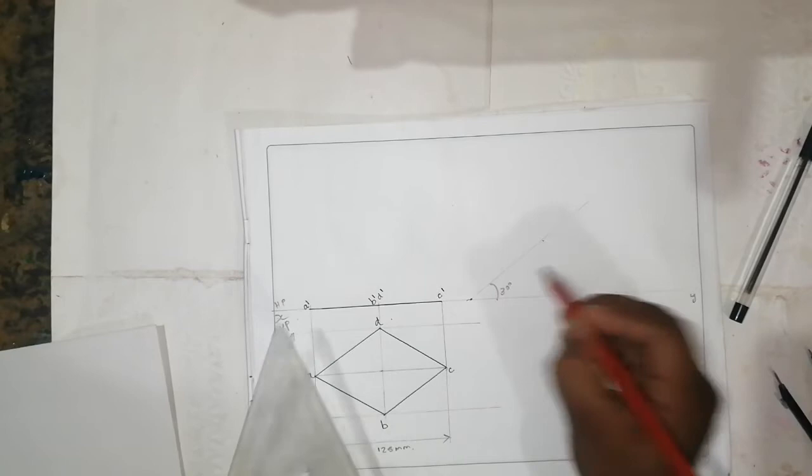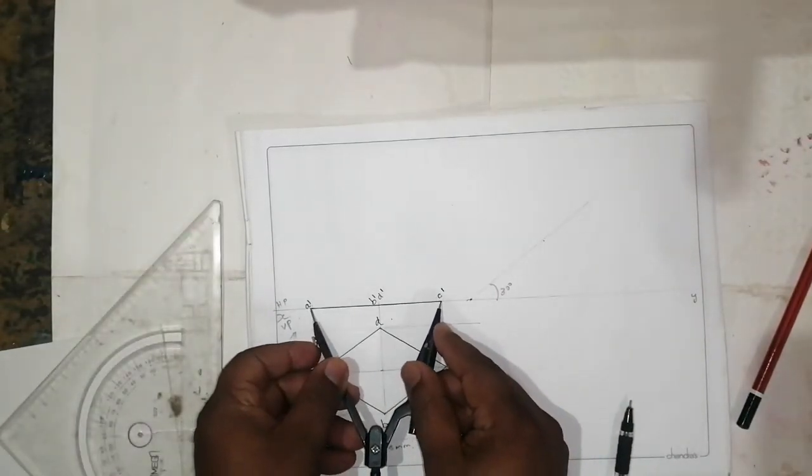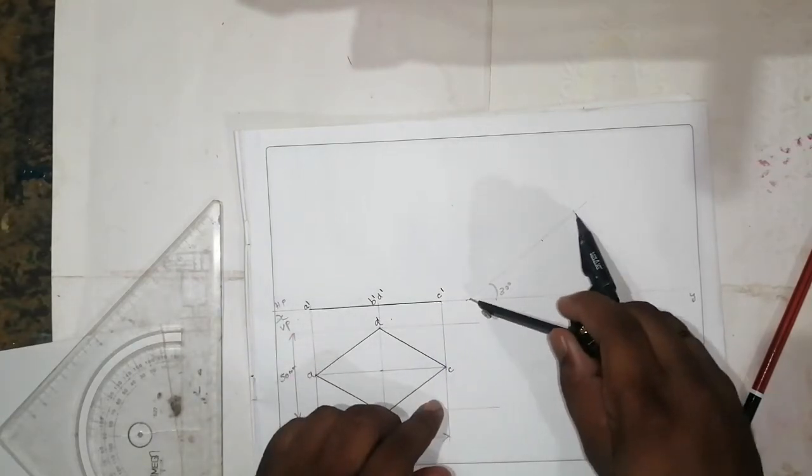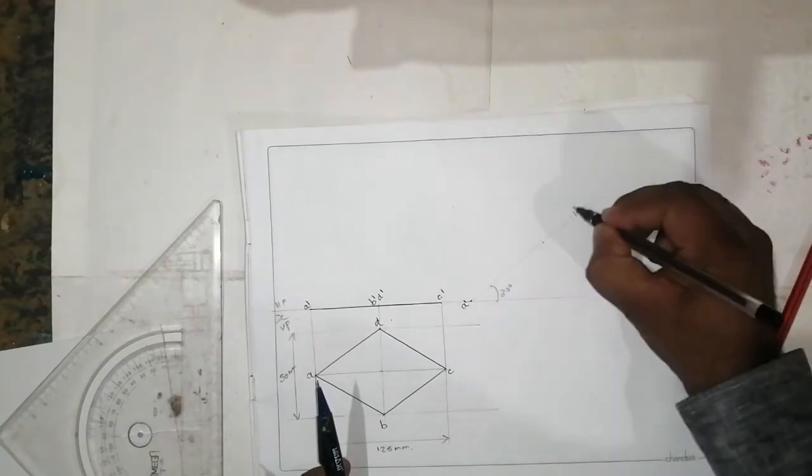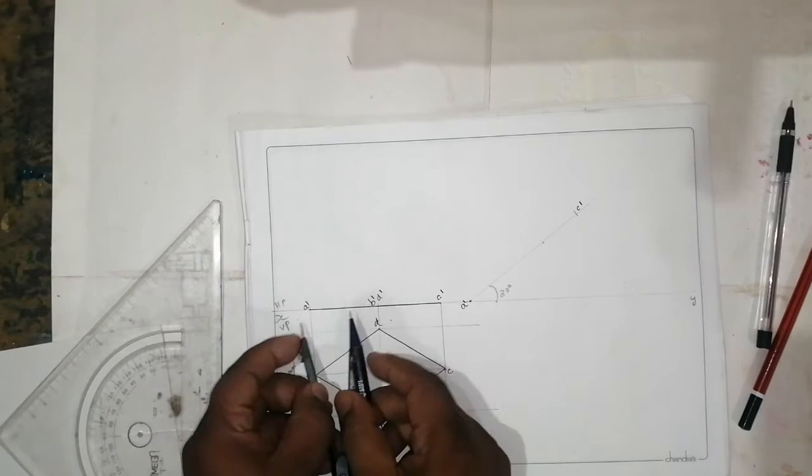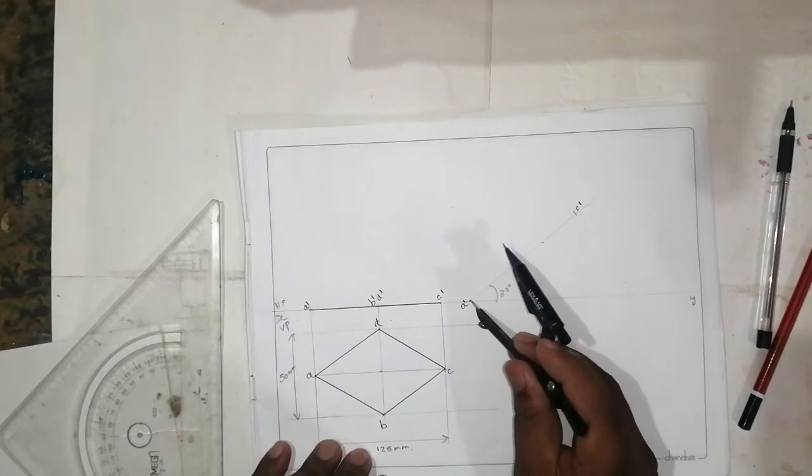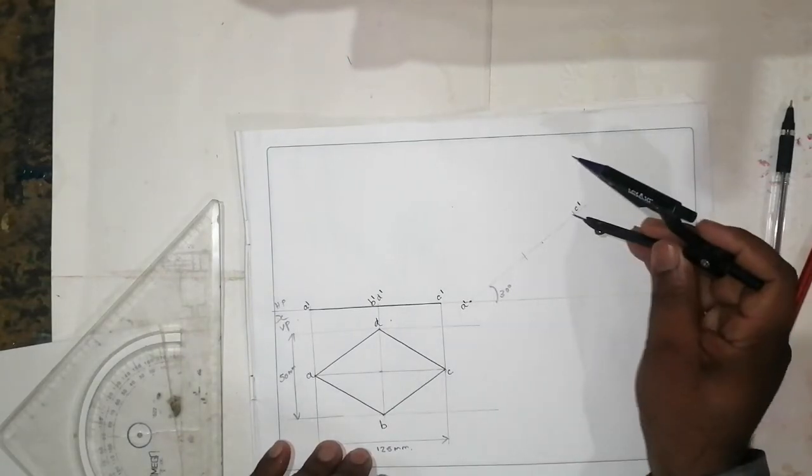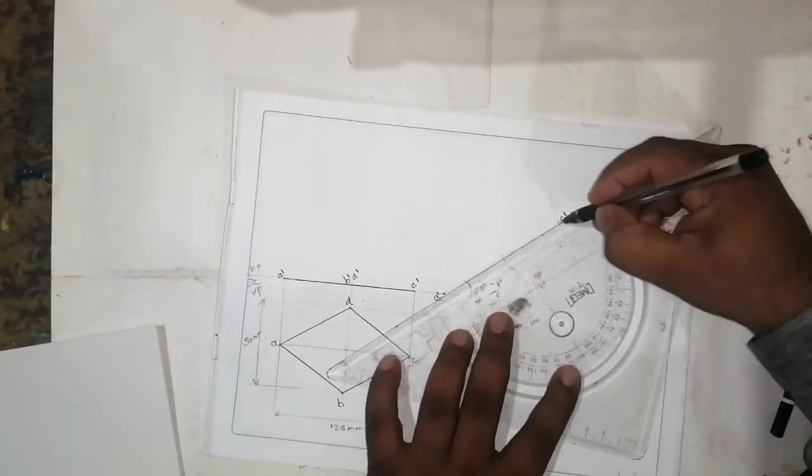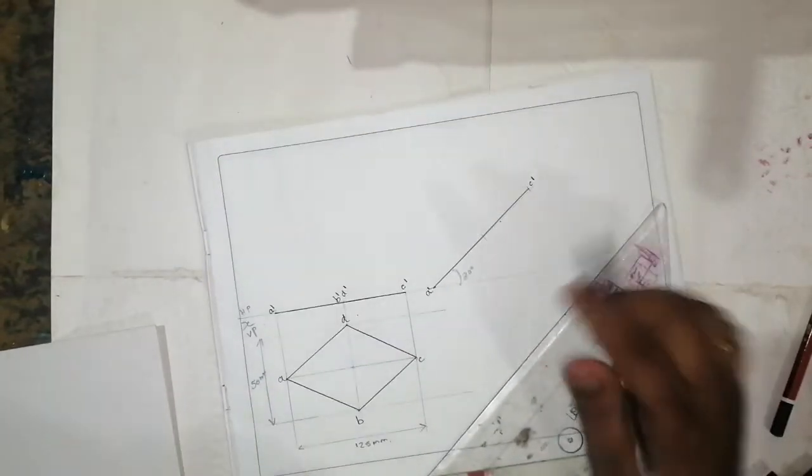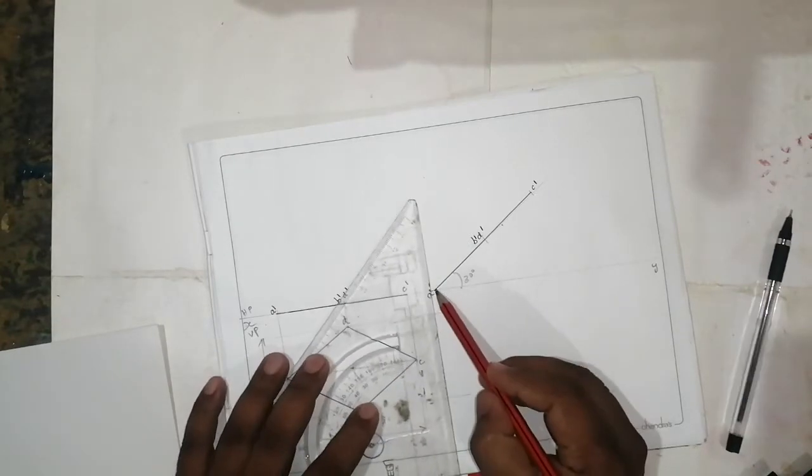This is going to be 30 degrees. By using a compass, from A to C cut an arc. This is going to be A dash and C dash. From A to B, cut an arc. From C, it is going to be the same. Make it dark, B dash and D dash. Using the projection line.